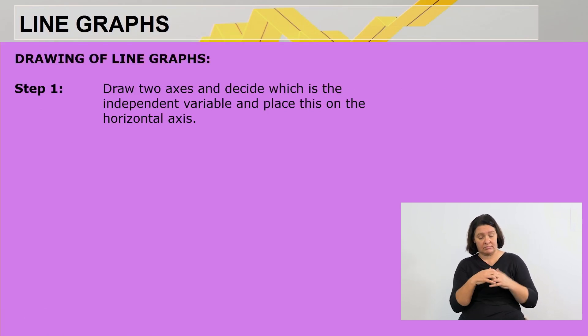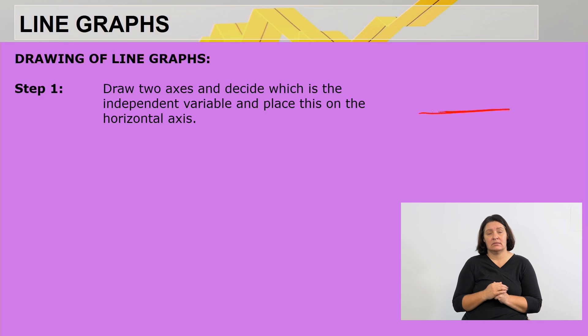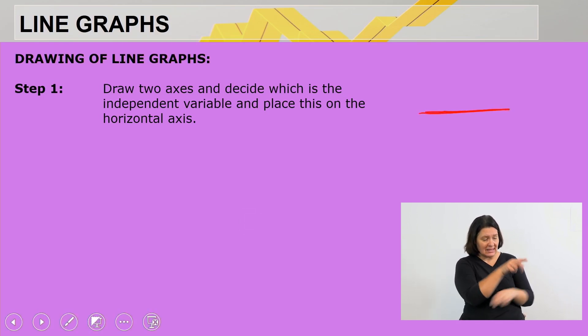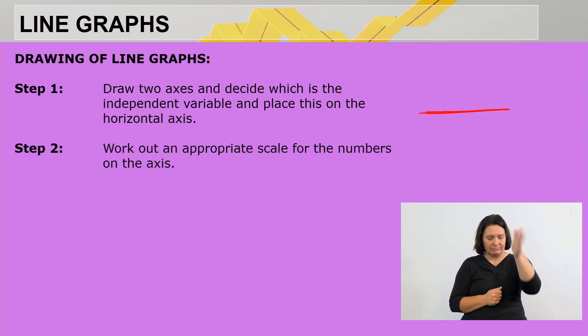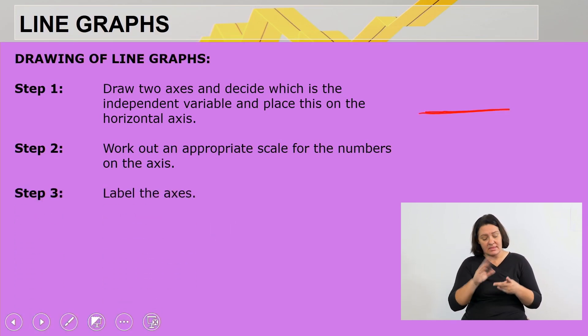Let's quickly look at the steps to follow. When we draw line graphs, you draw the two axes and decide which one is the independent variable and place this one on the horizontal axis. Then step number two, you work out an appropriate scale for the numbers on the axes.